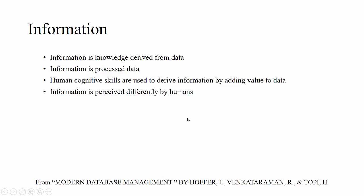There are several definitions of information: it is knowledge derived from data, it is processed data, or human cognitive skills are used to derive information by adding value to data. All of these definitions focus on getting knowledge or understanding from data.